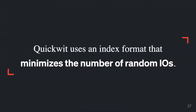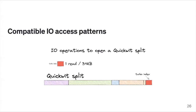We use an index format that minimizes the number of random IOs, and we're able to answer a search query with a minimum of three requests to object storage. That's why we can answer in less than a second. Worst case, each request takes 100 milliseconds times three is 300 milliseconds — though it takes more because you still need to download data and process it. The reason we can still do everything in less than a second is because we pre-compute and minimize the number of IOs we do to object storage.